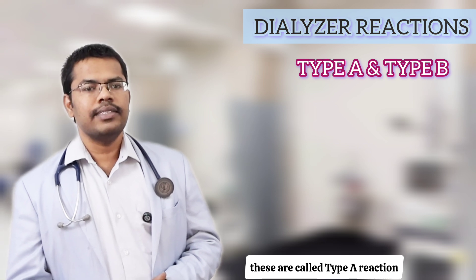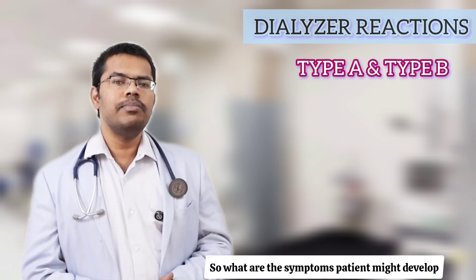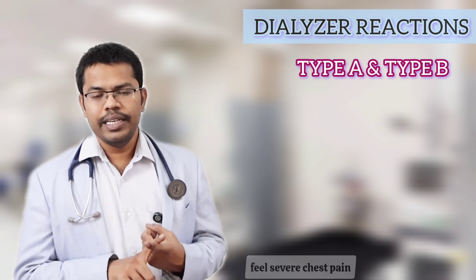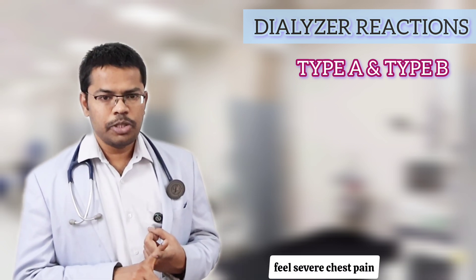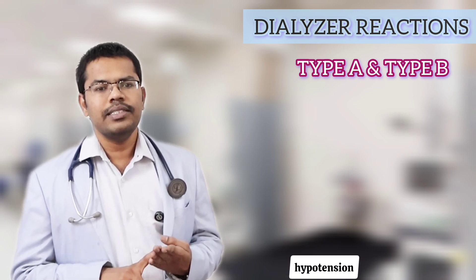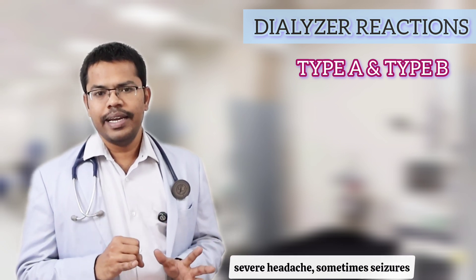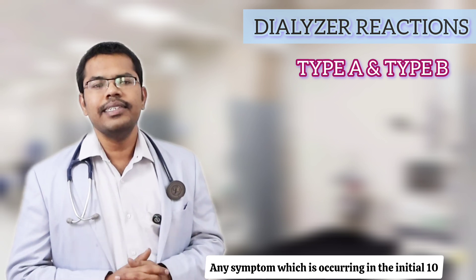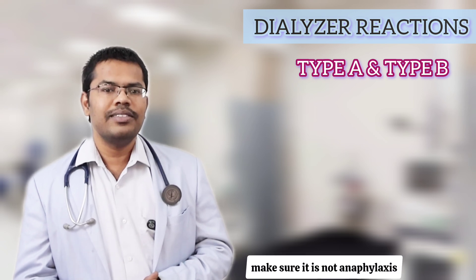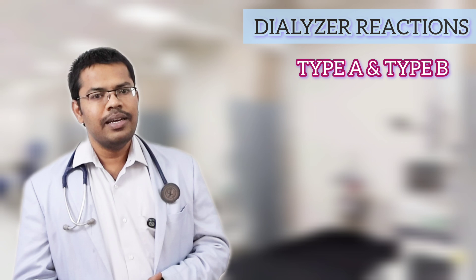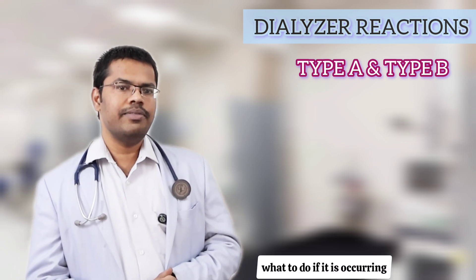These are called Type A reactions. What are the symptoms? Immediately after the start of dialysis, the patient might feel severe chest pain, itching, nausea, vomiting, hypotension, palpitation, severe headache, and sometimes seizures. Any symptom occurring in the initial 10 minutes of dialysis — make sure it is not anaphylaxis, because it might lead to a detrimental outcome.